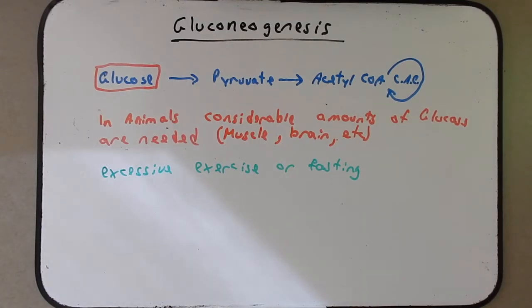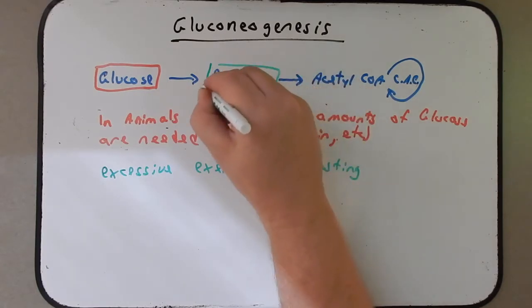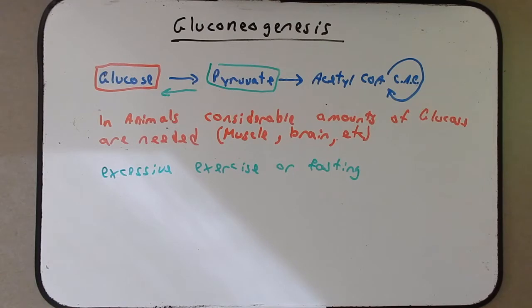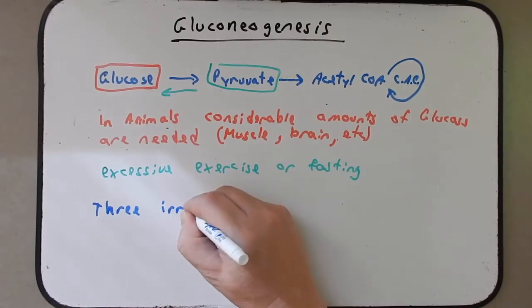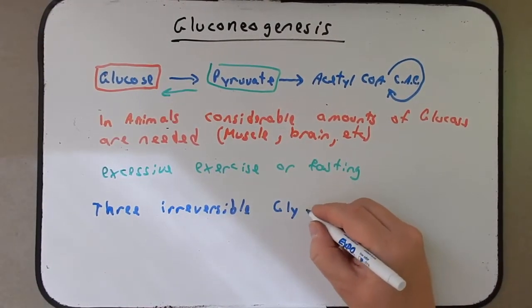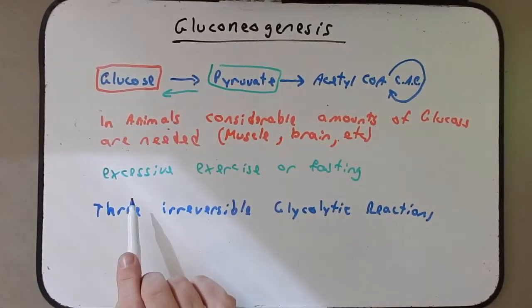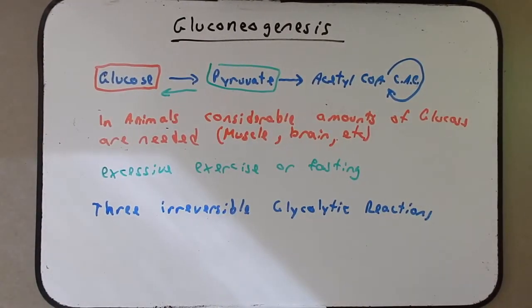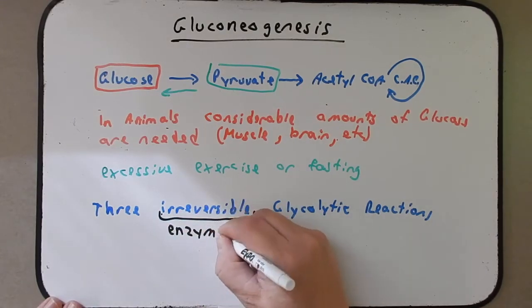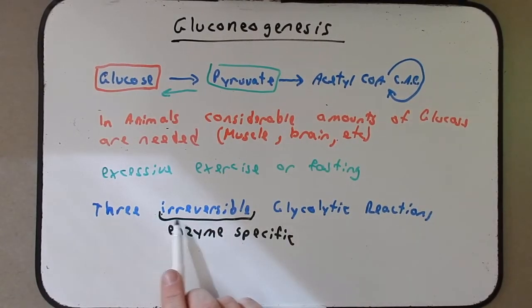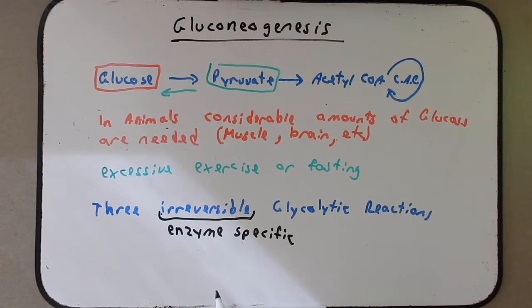So what gluconeogenesis is, is the conversion of pyruvate back to glucose. Now you might be thinking, but Gorsuch, you told us there were these three irreversible glycolytic pathways or reactions. If there are three steps here that are irreversible, how do we ever go back to glucose? I want you to remember that the word irreversible is enzyme specific. The enzyme that regulates these three irreversible glycolytic reactions is so effective at binding its substrate and converting it into product that it can't go the other way.